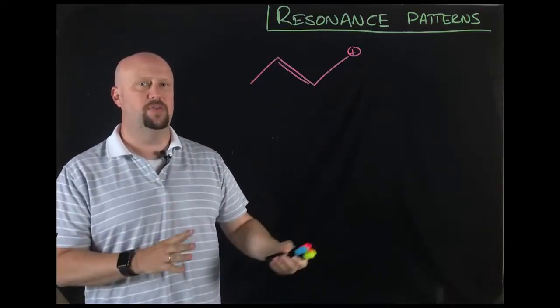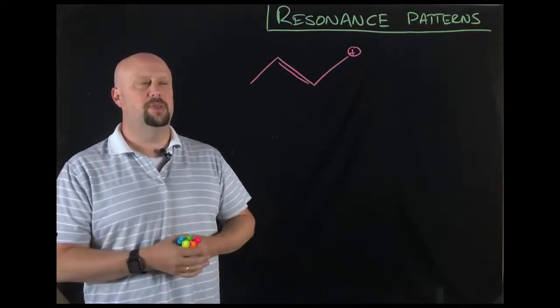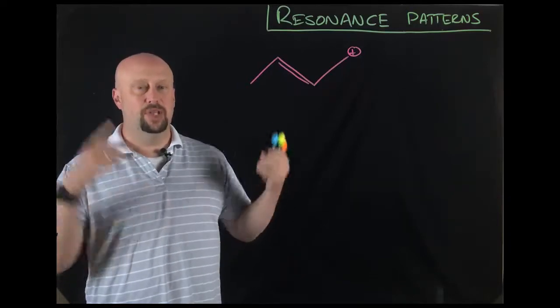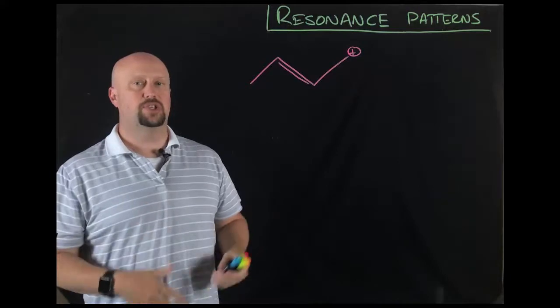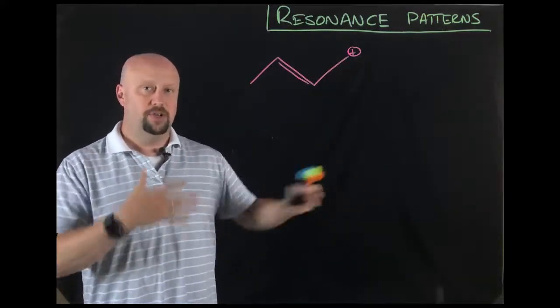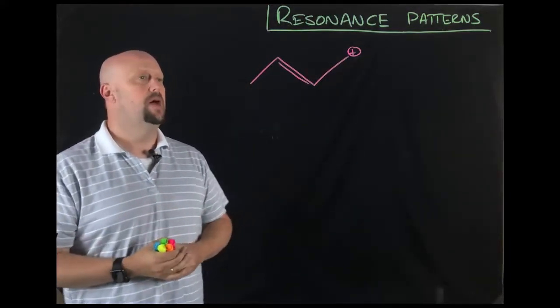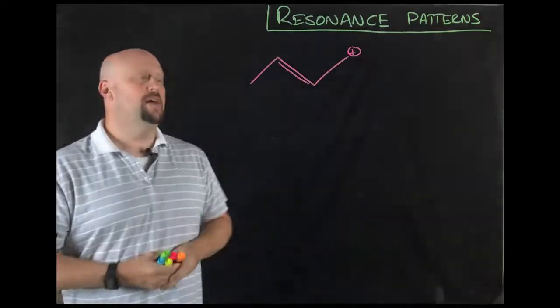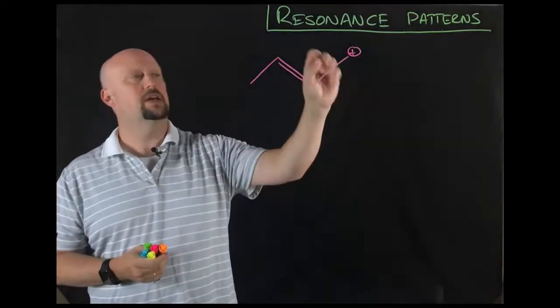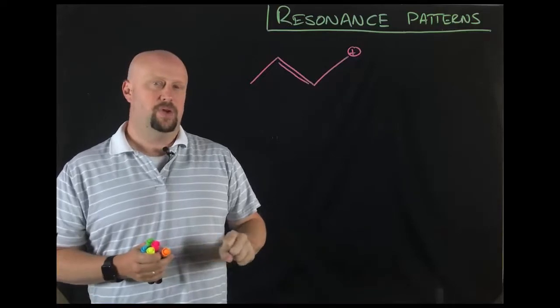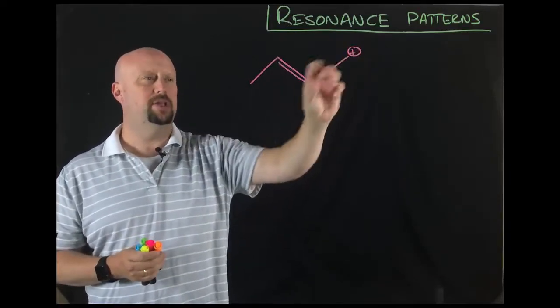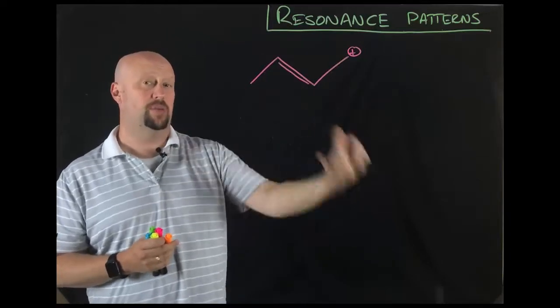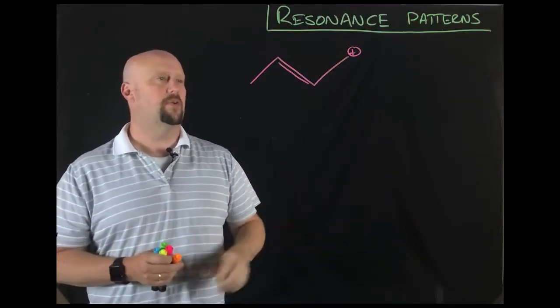So what we're going to talk about in this video then, is how to recognize some of the patterns that should immediately click in your brain and say, hey, this is a resonant structure. I can figure out what the other structures are once I know that it is resonant. So in this case, what we have here is we have an allylic cation. An allylic positive charge.